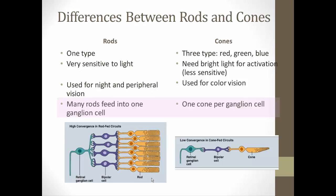Cones, on the other hand, are hooked up one-to-one with a bipolar cell and one ganglion cell. So if a cone is hit, it sends an action potential in that specific ganglion cell, and the brain can interpret exactly which cone was activated. We have much higher acuity vision with cones than with rods.